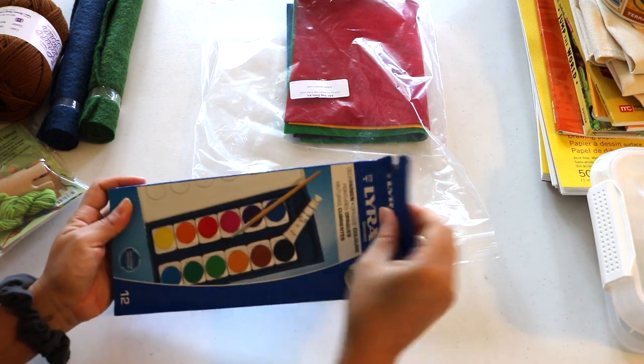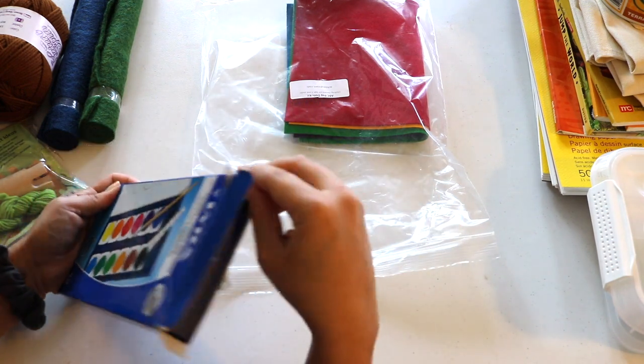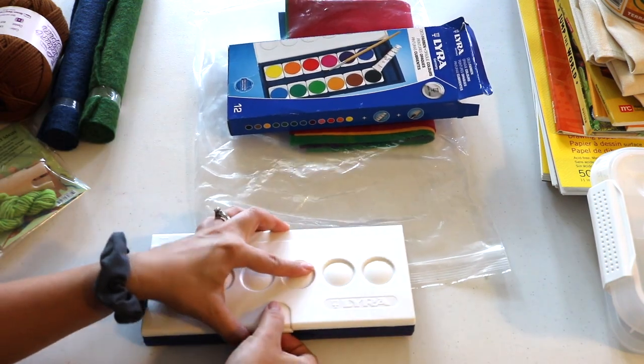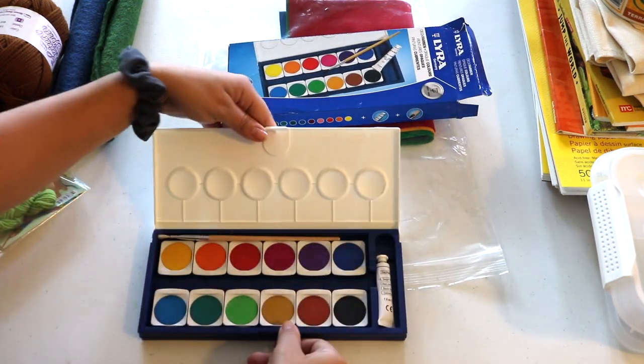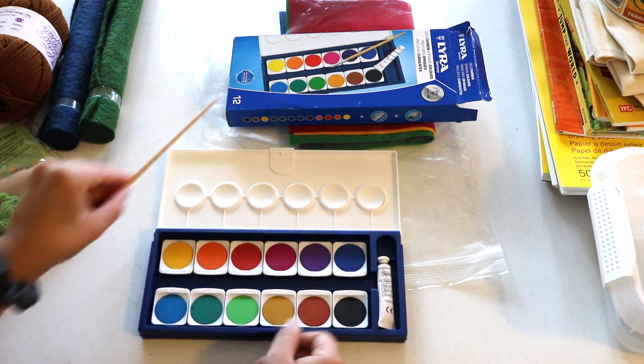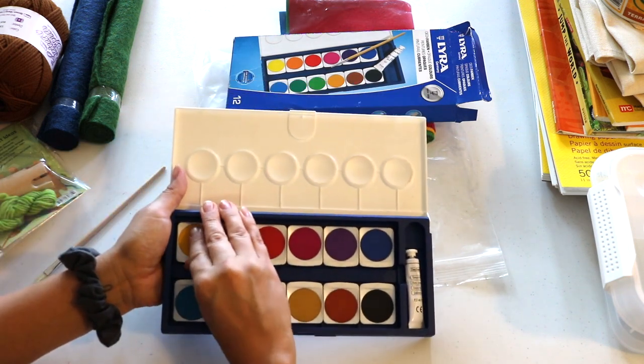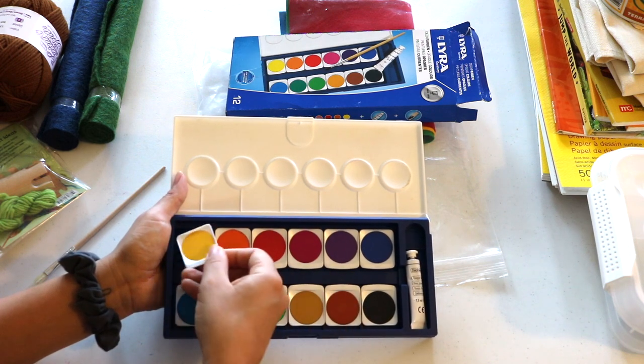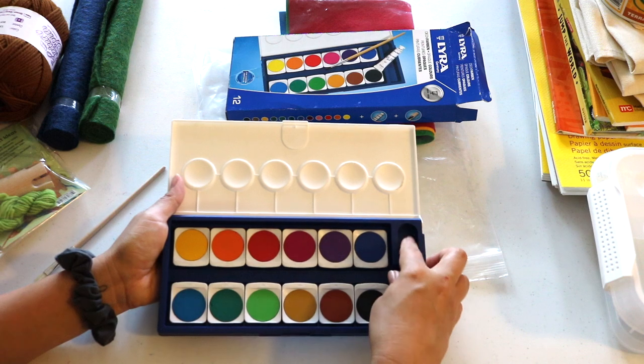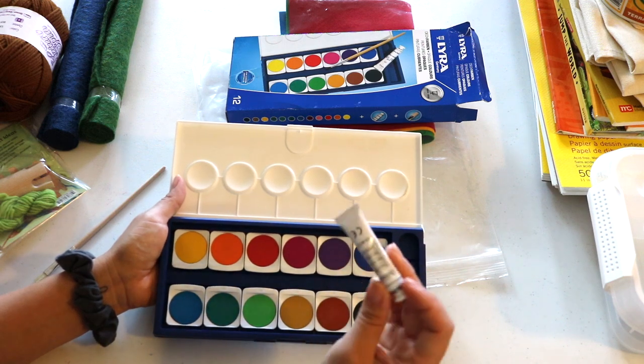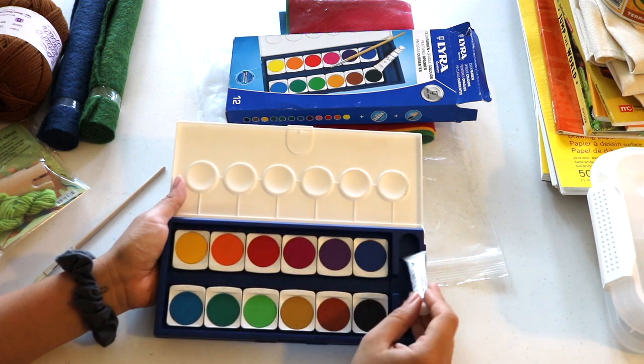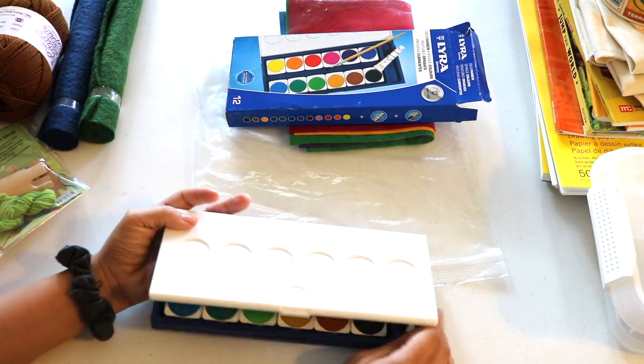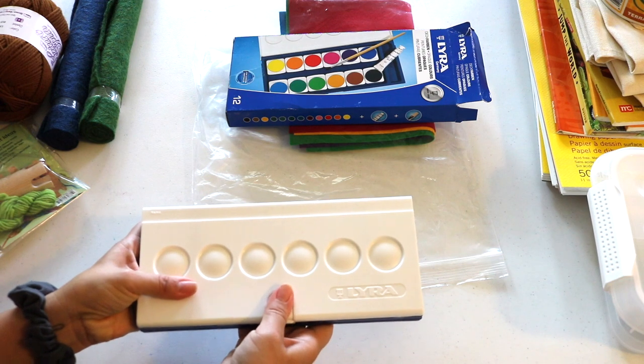Next in the kit is one Lyra opaque watercolors and paintbrush set. I've had my eye on this palette for a while, so I'm excited to have it in hand. The case seems durable, a nice thick plastic. Inside you have your 12 pans which are removable so you can customize your palette or refill colors as needed, the white tube paint here, and then there is one paintbrush included. It seems to have stiff bristles. I'm not sure about the quality, but we'll find out soon enough.